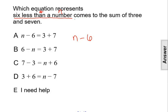Then we have the word comes to. So comes to is the clue for the equal sign in the equation. It's the same as is or equals to. Then we have what is it equal to? We have the sum of three and seven. Sum is our clue word for addition, and we have the numbers three and seven.